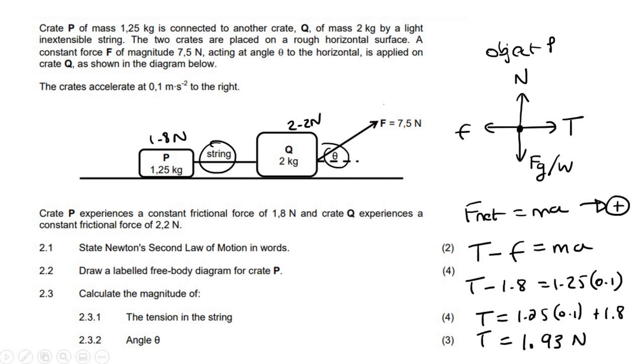And you won't say right or left because this tension acts right and left. On this object it acts to the right, and on this object it acts to the left. And that's why they said magnitude anyways. There's no direction for that. Then this question, for only three marks, says calculate the angle.